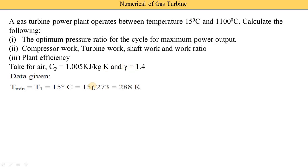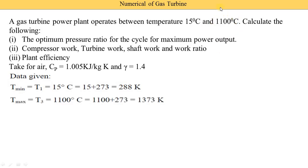Now we note the given data. First temperature T1 is 15 degrees centigrade; converting to Kelvin: 15 + 273 = 288 Kelvin. Next, T3 is 1100 degrees centigrade; converting: 1100 + 273 = 1373 Kelvin.